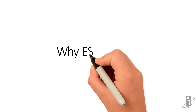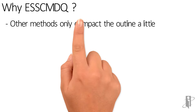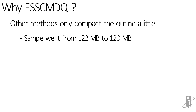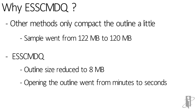So why would I want to use S-Command-Q over these other methods? In the other methods, they only compact an outline a little bit when you're using EAS or MaxL. For example, I had a sample outline that went from 122 meg and it only went down to 120 meg. With S-Command-Q, the outline file was reduced to about 8 meg, and opening the outline went from minutes to seconds.